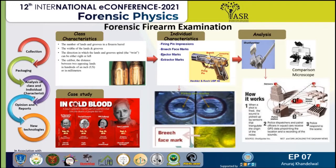For extractor and ejector marks: in modern firearms there is an extractor and ejector system for removal of empty cartridge cases from the chamber. With the help of the extractor, the cartridge case is removed by pulling it towards the back side. After removing the cartridge case from the chamber, there is an ejection of the cartridge case with the help of the ejector. Generally there is an absence of an ejector system in revolvers. Impurities present on the surface of the extractor and ejector imprint striation marks on the surface of the cartridge case during its removal.